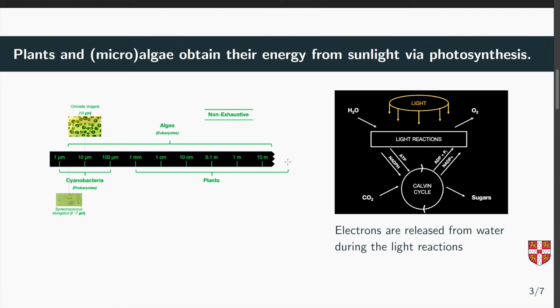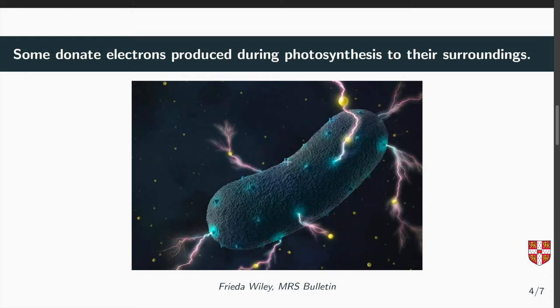Some cyanobacteria species actually send out some of the electrons generated during photosynthesis and respiration outside of the cell. There are a few ideas why they do this. One, it may be a way for them to obtain important metals such as iron from their surroundings or two, might be a way for communicating with other cells using a chemical language called quorum sensing.